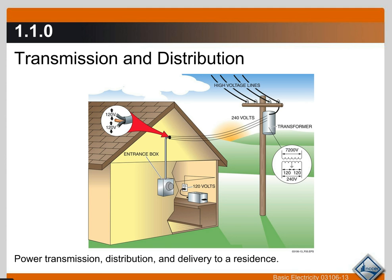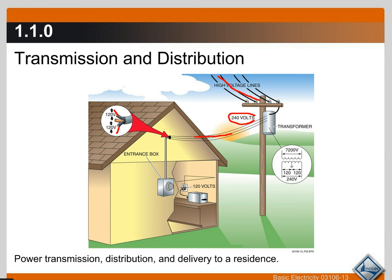The high voltage lines come into the transformer out on the pole, which steps the voltage down to 240 volts. That feeds through our service line into the house on two wires — 120 volts on one wire and a different phase of 120 on another. Don't worry about phases right now; just know it comes in on two lines at 120 each into the entrance box, then distributed throughout the home. Standard plug-in outlets for TVs and toasters are 120V; electric water heaters, air conditioning condensing units, and compressors use 240 volts.